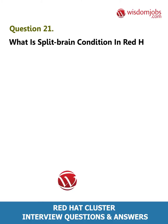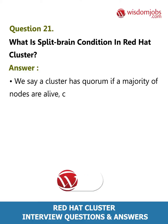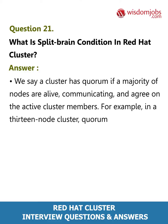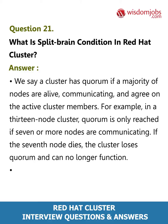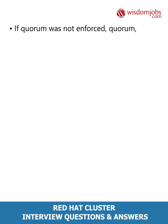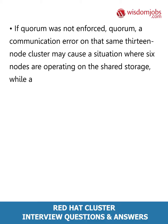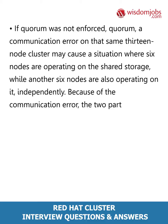Question 21: What is split brain condition in Red Hat Cluster? Answer: We say a cluster has quorum if a majority of nodes are alive, communicating, and agree on the active cluster members. For example, in a 13-node cluster, quorum is only reached if seven or more nodes are communicating. If the seventh node dies, the cluster loses quorum and can no longer function. A cluster must maintain quorum to prevent split brain issues.